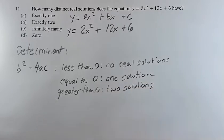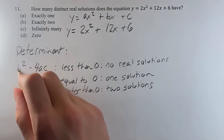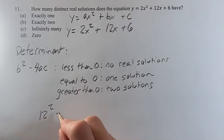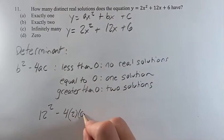So all we have to do is calculate it for this equation, and we'll get our answer. So b squared is 12 squared minus 4 times a, which is 2, c, which is 6.